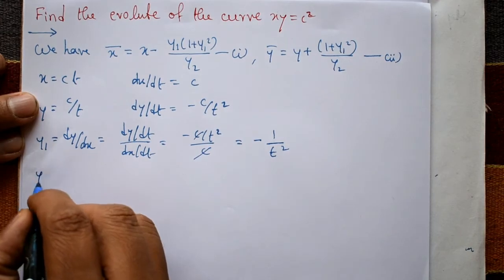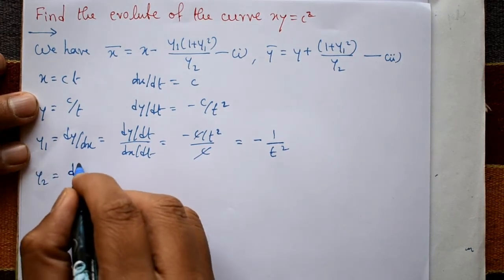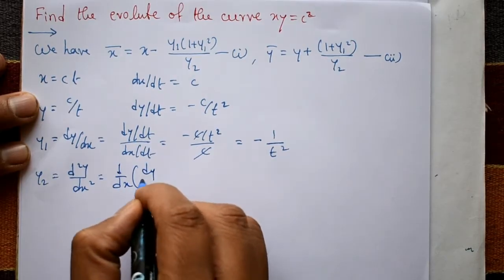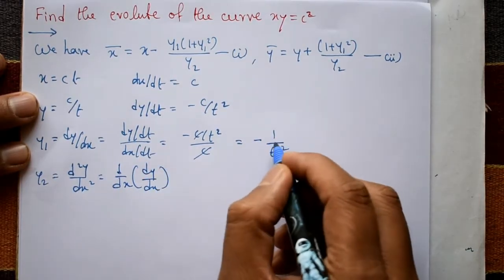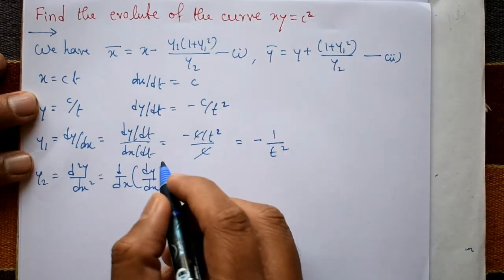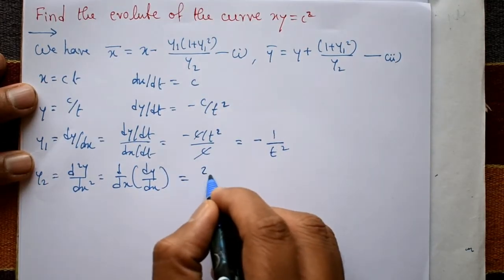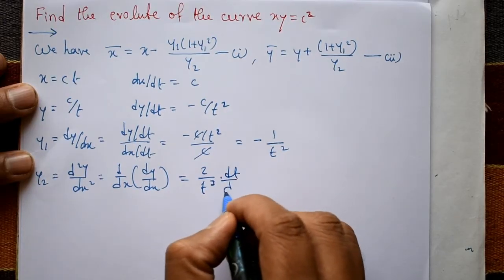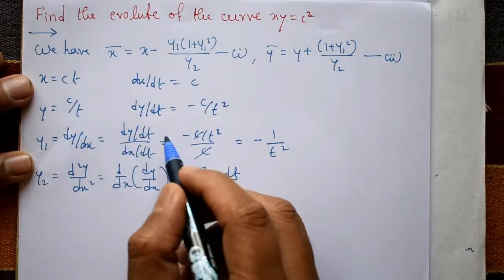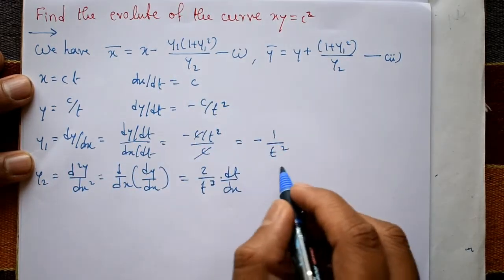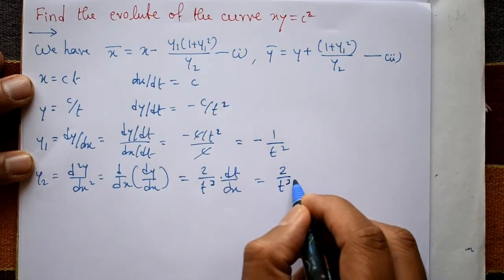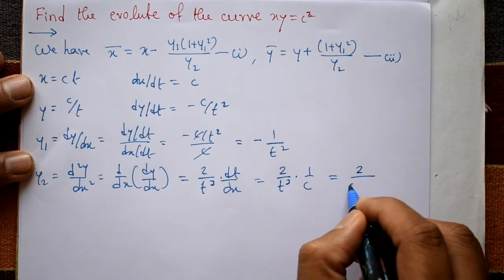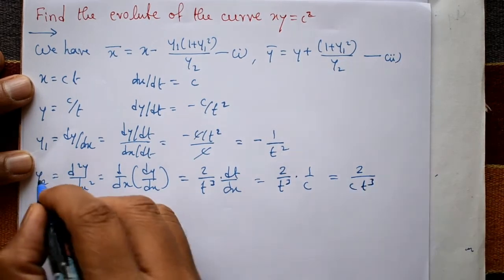Now go to y2, the second order: d squared y by dx squared, or d by dx of dy by dx — differentiate dy by dx again with respect to x. We get 2 by t cubed into dt by dx. Since dx by dt equals c, dt by dx is 1 by c. So y2 equals 2 by c into t cubed.